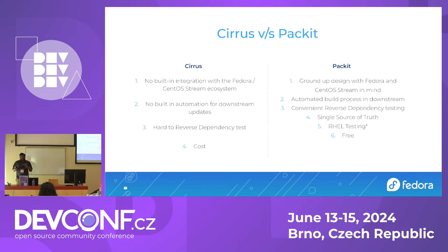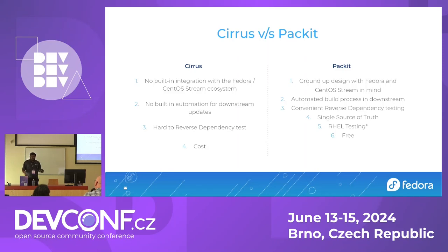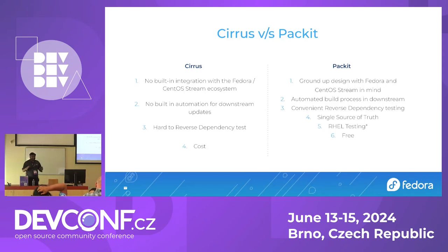So, a brief comparison between Cirrus and Packit. Cirrus is just a third-party tool and it doesn't understand what Fedora and CentOS Stream are. It's very hard to maintain the release mapping — we have to change it every time a release goes EOL or a new release gets added. Packit takes care of all of that; it's Packit's headache, not yours. They maintain all the release mappings for you, same with CentOS Stream.